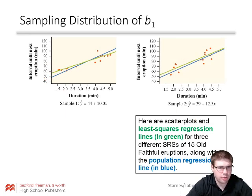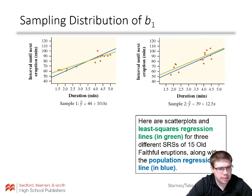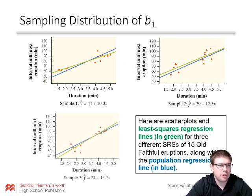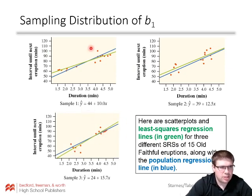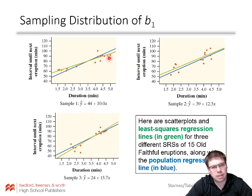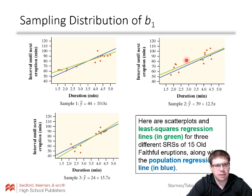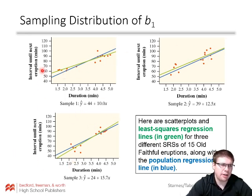Here's another sample — again the slope is slightly off. And in this third one, same thing. The slope could be a little bit lower in one case and a little bit higher in another. The y-intercept varies too — a little high, a little high, a little low. These are things to keep in mind when dealing with sample regression lines.